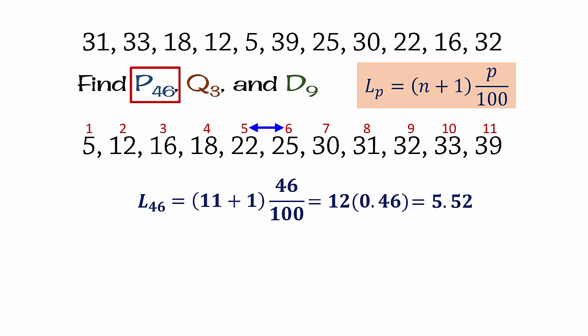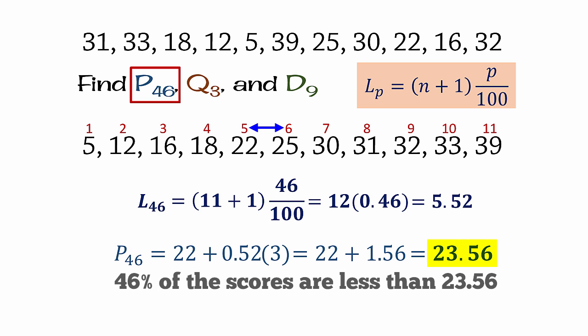In particular, it is 52% of the distance between them. So the 46th percentile is calculated as 22 plus 0.52 times the distance between 22 and 25, which is 3. That gives 22 plus 1.56, and the 46th percentile is 23.56, meaning that 46% of the scores are less than 23.56.